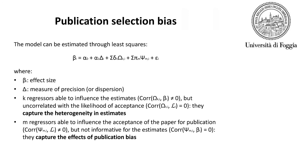The set of co-variates should capture both the heterogeneity in estimates and the publication bias. The co-variates include regressors able to influence the estimates but uncorrelated with the likelihood of acceptance, as well as regressors that are likely to influence the acceptance of the paper for publication but are not informative for the estimates.